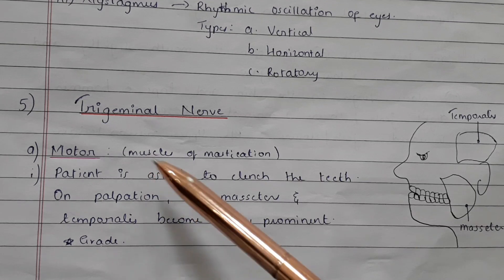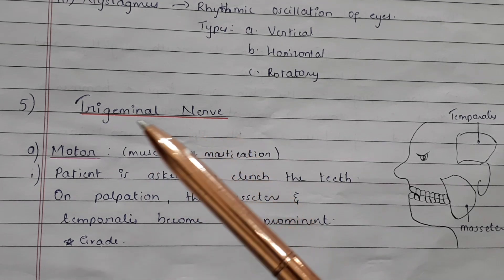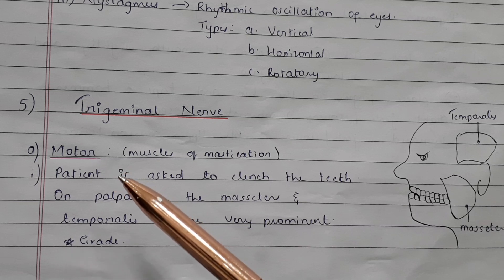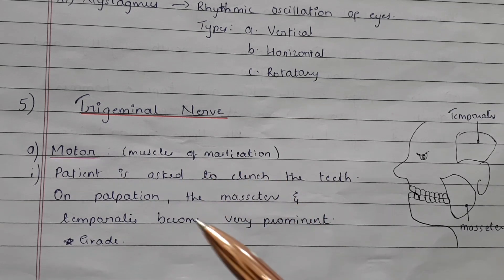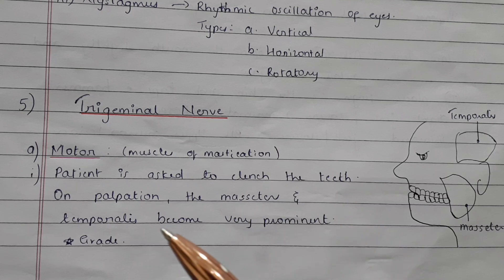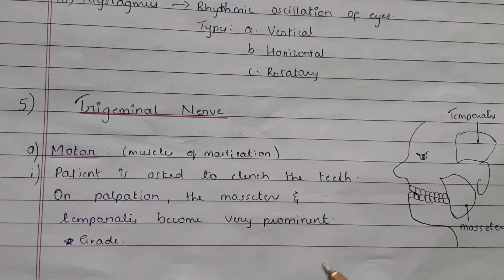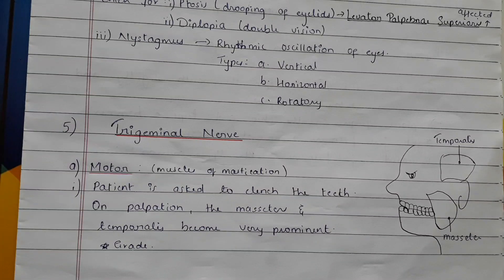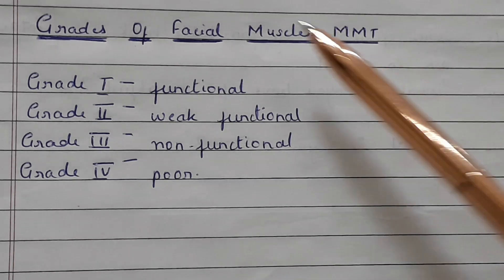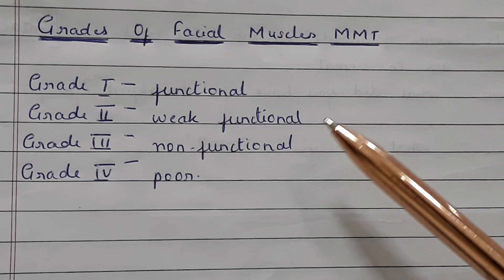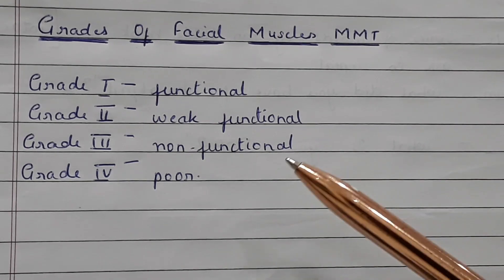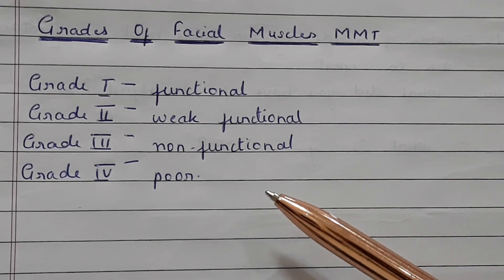The fifth cranial nerve is the trigeminal nerve. To check the motor part, which includes the muscles of mastication, the patient is asked to clench the teeth. On palpation, the masseters and the temporalis muscle become very prominent. You can also grade the muscles accordingly using the facial muscles MMT grading: Grade 1 is functional, Grade 2 weak functional, Grade 3 non-functional, Grade 4 poor.